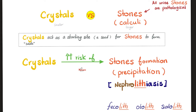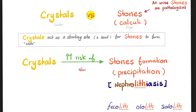What's the difference between crystals and stones? Crystals are smaller; stones are larger. If I have a few crystals in the urine, maybe it's not a big deal, but stones are always bad — always a pathology, always a disease. Crystals act as a starting site, a seed for stone formation. The more crystals you have over a long period of time, the greater your risk of stone formation.